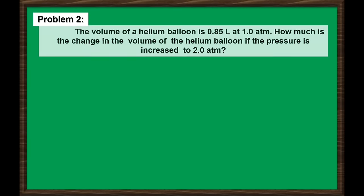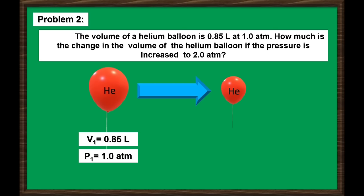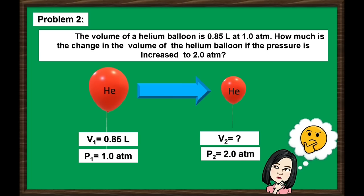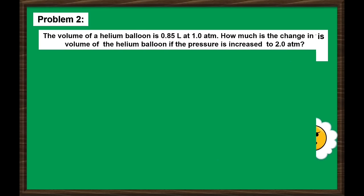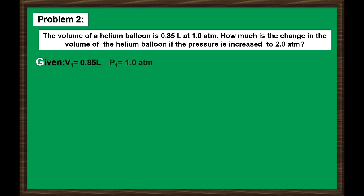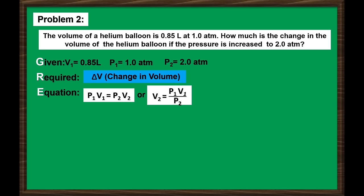Here is problem number 2. The volume of a helium balloon is 0.85 liters at 1.0 atm. How much is the change in volume of the helium balloon if the pressure is increased to 2.0 atm? In this problem, we are looking for the change in volume — the difference between the final volume and initial volume. The given values are: initial volume = 0.85 liters, initial pressure = 1.0 atm, and final pressure = 2.0 atm. We will use Boyle's Law equation to find the final volume, then compute the change in volume.